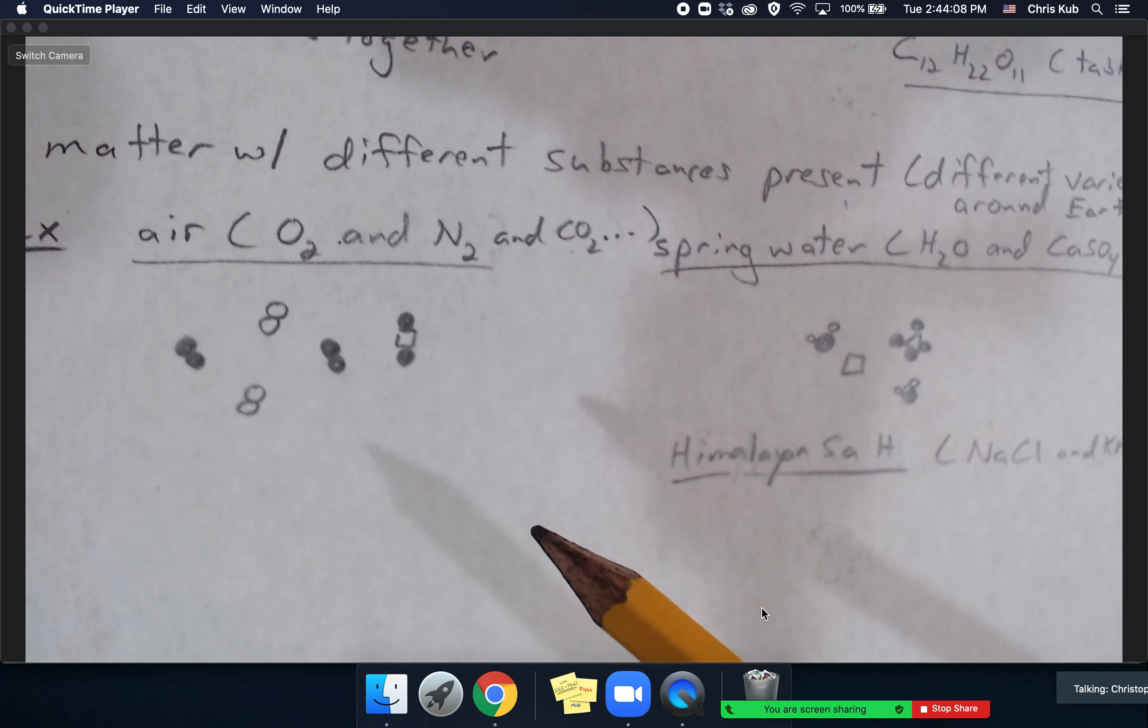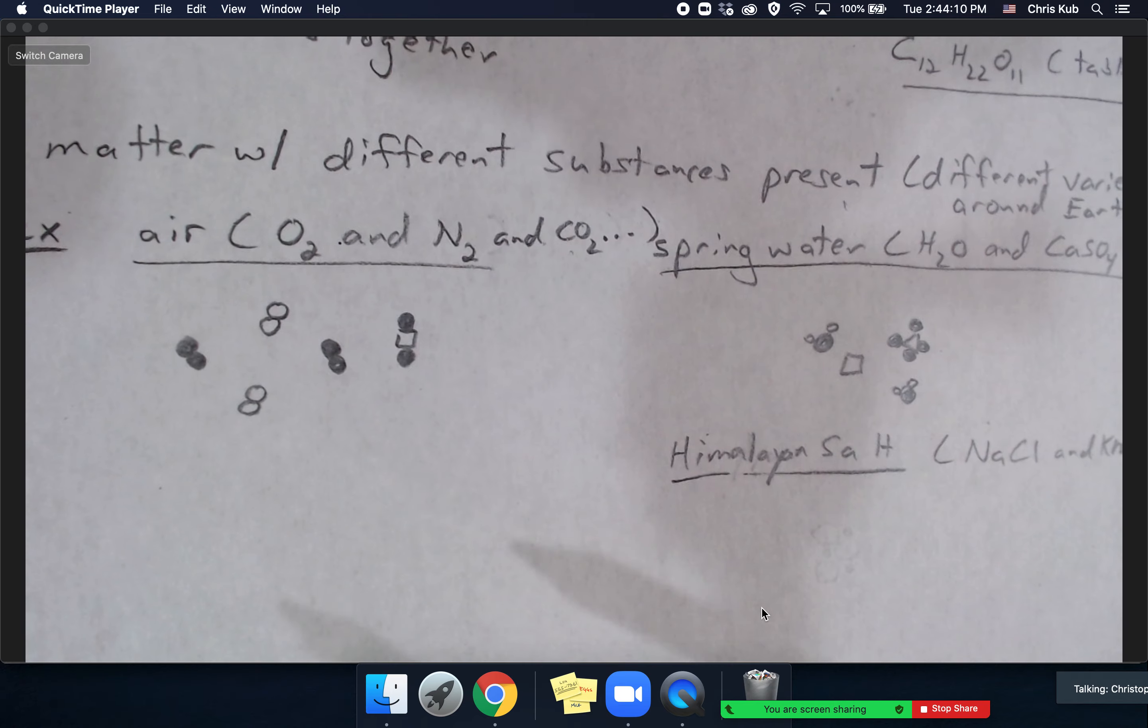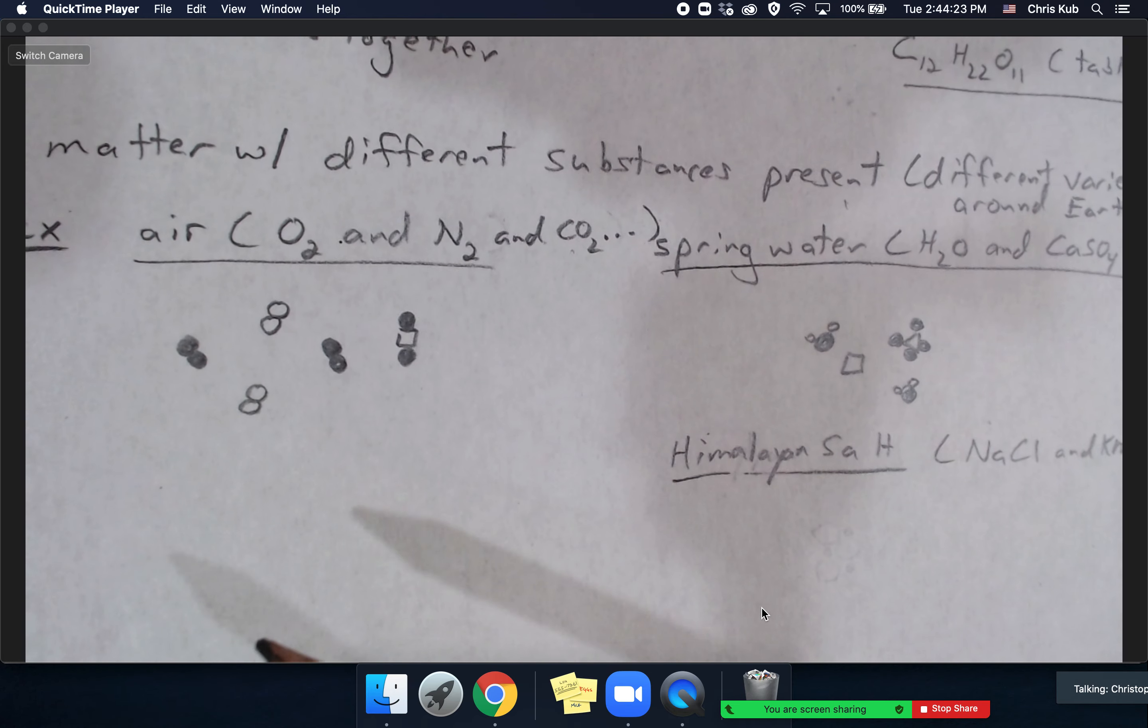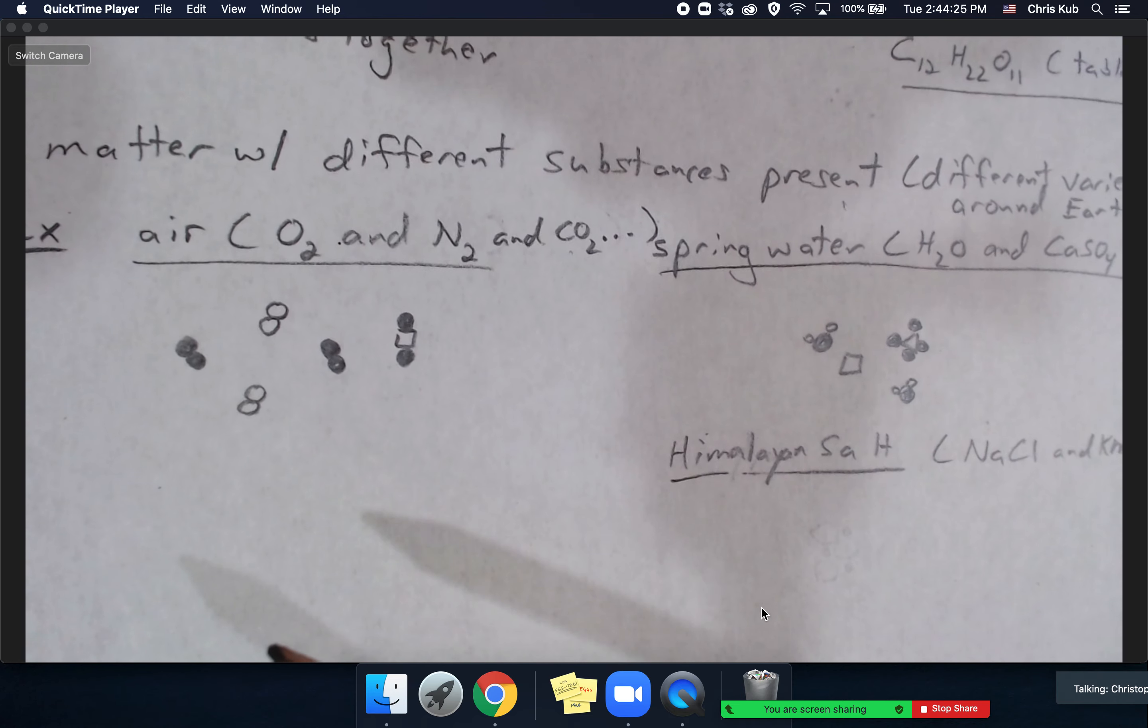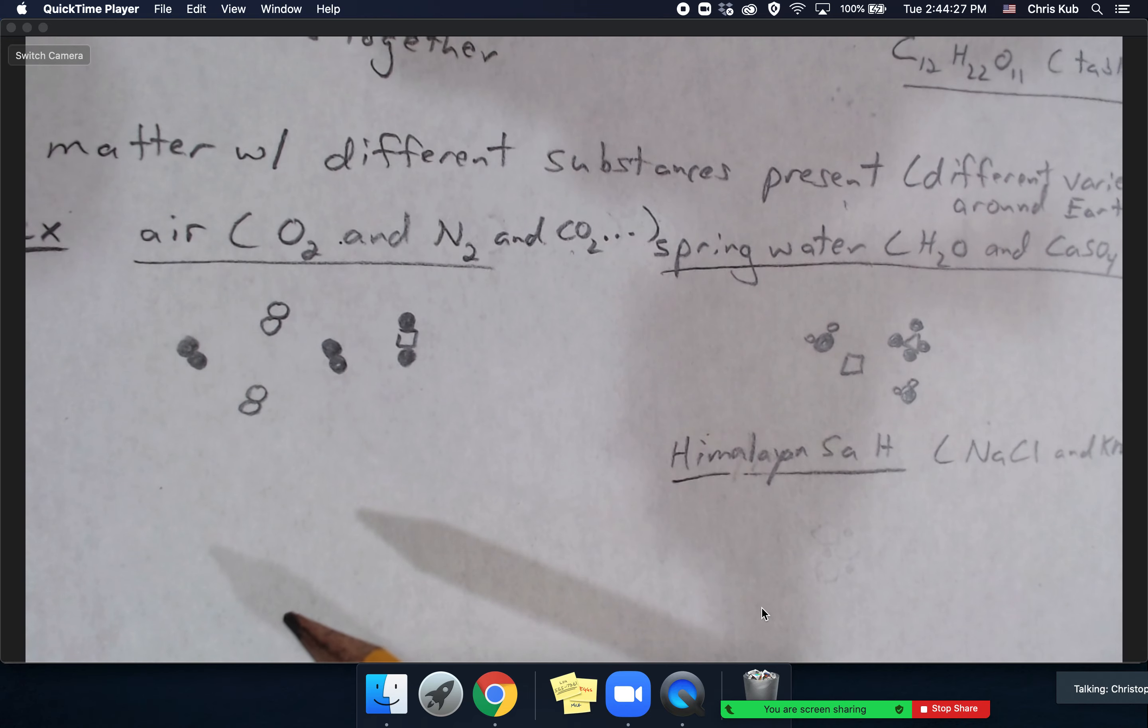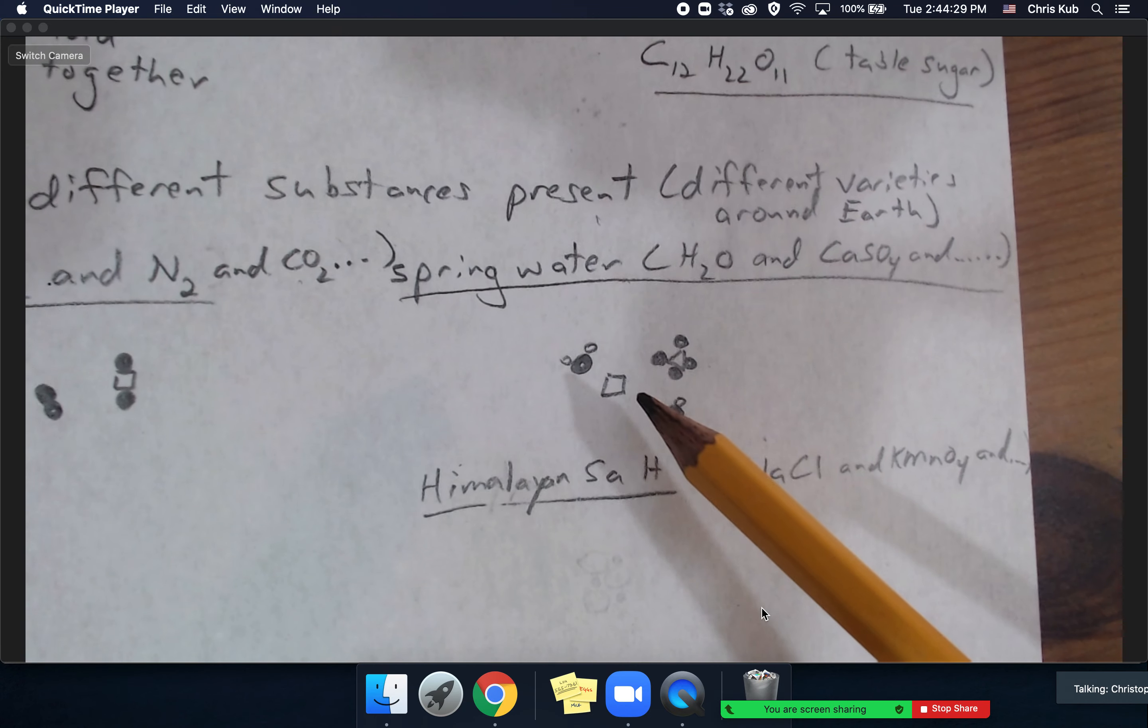So air can kind of be different. Around a smokestack you might find more carbon dioxide than not around a smokestack. How do you know air is a mixture? There's different types around the world - like right around your mouth you might have more carbon dioxide than high up in the atmosphere, for example.